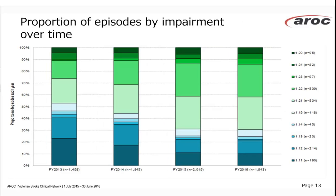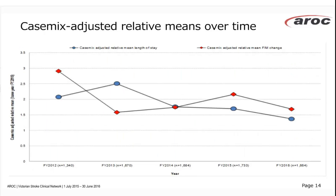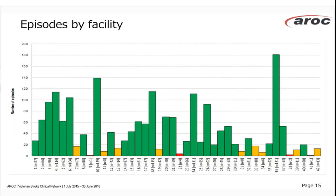In terms of impairment, the 1.1 codes (blue) are hemorrhagic and the 1.2 codes (green) are ischemic strokes. Looking at 2015-16 data, which most accurately reflects the appropriate volumes, about 30% of episodes are hemorrhagic and the remainder ischemic — and that's remained fairly stable. There are 42 facilities providing stroke data, with varying volume across them.